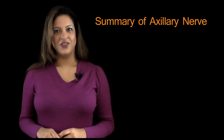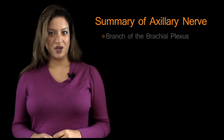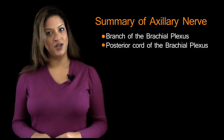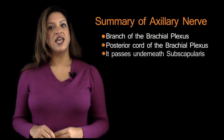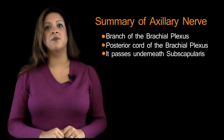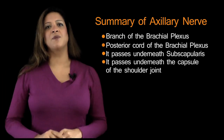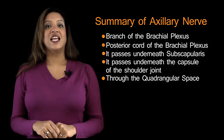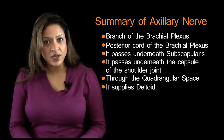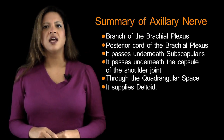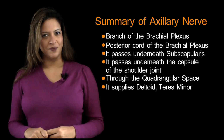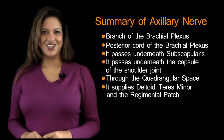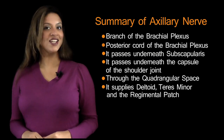To summarise: the axillary nerve is a branch of the posterior cord of the brachial plexus; it passes underneath subscapularis and underneath the capsule of the shoulder joint; through the quadrangular space; and it supplies the deltoid, teres minor, and a small patch of skin — the regimental patch. And there you have it, the axillary nerve in a nutshell.